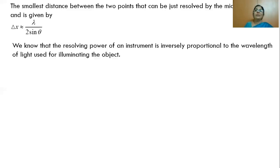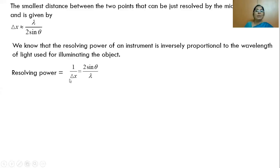The resolving power of an optical instrument is inversely proportional to the wavelength of the light used for illumination of the object. Resolving power equals 1 by delta x, which substituting the formula gives 2 sin theta by lambda. Thus, resolving power is inversely proportional to lambda.